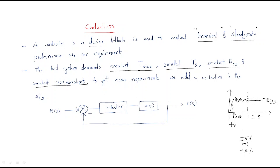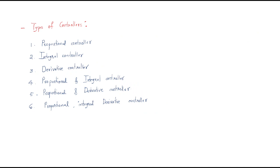Generally the block diagram is like this: we have a system G(s), and we add a controller to the system. That controller is represented with the gain Gc(s). It will give the output, and by adding this controller we will maintain all these performance parameters.